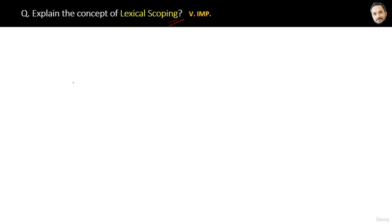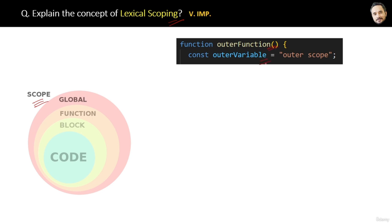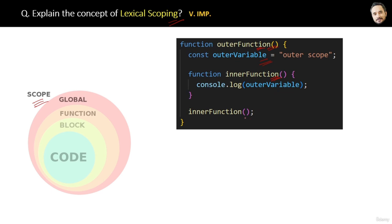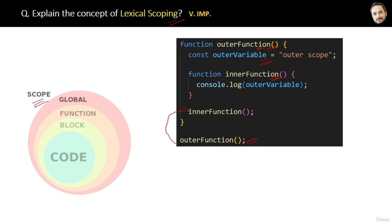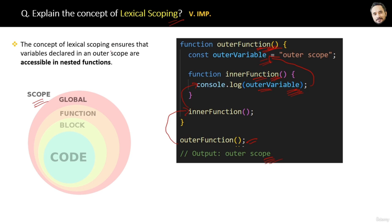Before understanding lexical scoping, we need an idea of scoping in JavaScript. Suppose we have an outer function with an outer variable, and inside that outer function there is also an inner nested function. When we call the outer function it ultimately calls the inner function. The inner function is able to access the outer variable which belongs to the parent outer function, and we get the proper output. This ability of the inner function to access the variable of the outer function is called lexical scoping.